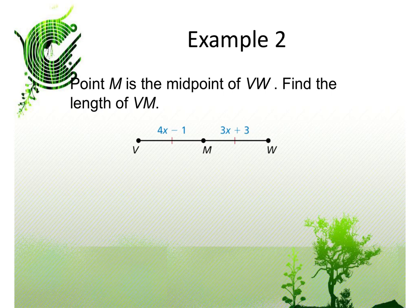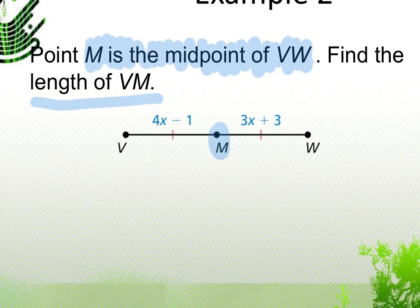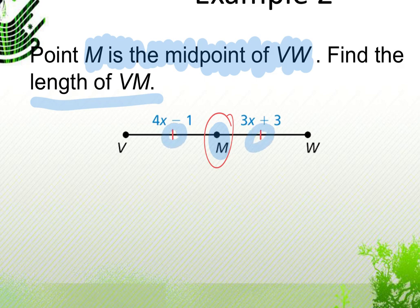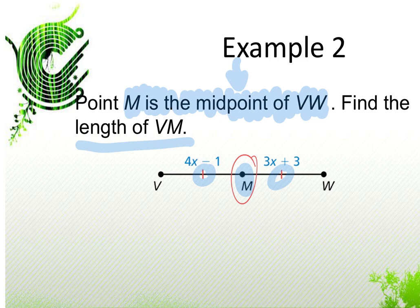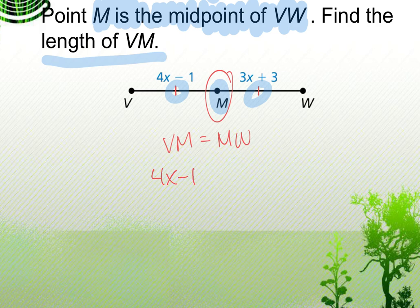Moving on: M is the midpoint of VW. Always highlight the important information given in the problem. Since M is the midpoint, it cuts VW in half. Find the length of VM. We aren't given the actual lengths, but we know the relationship: VM must equal MW because M is the midpoint. Sometimes problems won't show congruence marks, so read the instructions carefully.